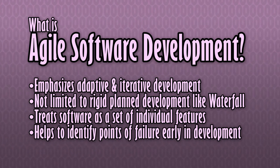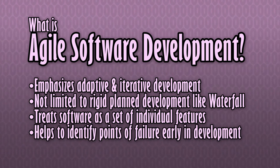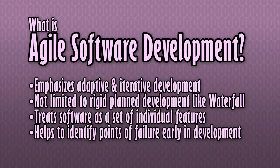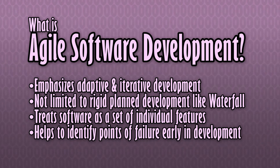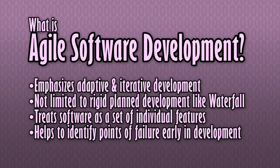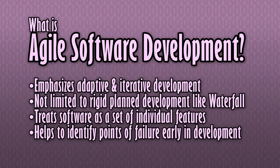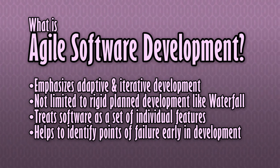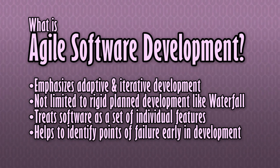As per our prototyping phase mentioned in the last video, in game development our greatest enemy is not knowing that something sucks until it's too late to do anything about it. Which is why Agile, and most commonly Scrum, are employed. It aims to do away with a lot of the red tape of software development by avoiding unnecessary time documenting or planning and instead focusing on fast-paced collaborative development.